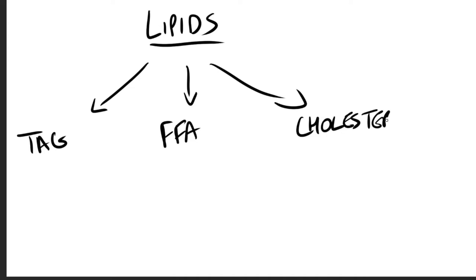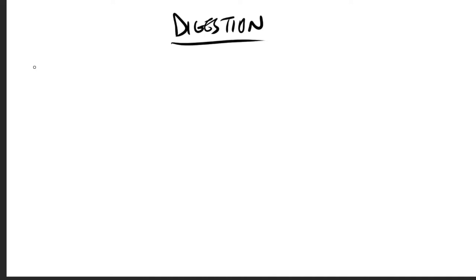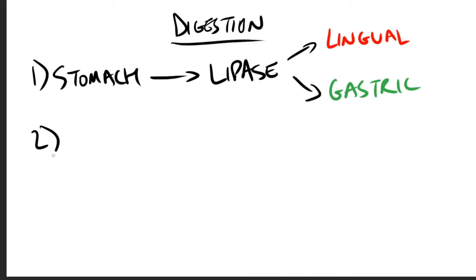Digestion begins in the stomach. That's our number one, catalyzed by an acid-stable lipase. There are two types: there is the lingual lipase and then there's the gastric lipase. The TAG molecules, as I said triacylglycerol, that are less than 12 carbons are the primary target of this enzyme.